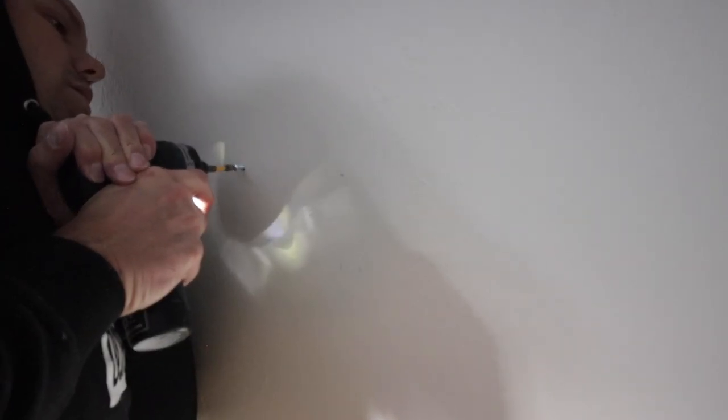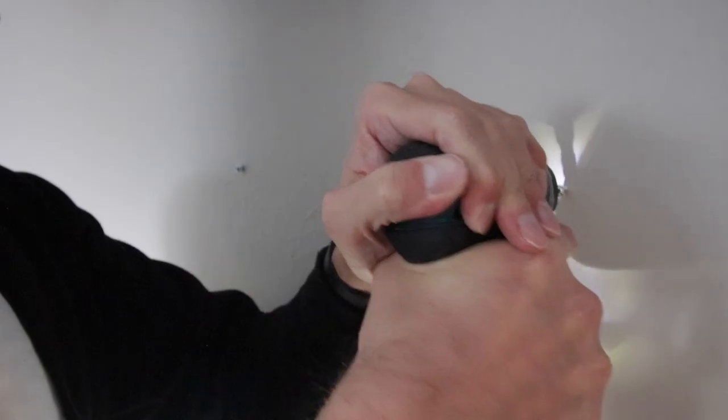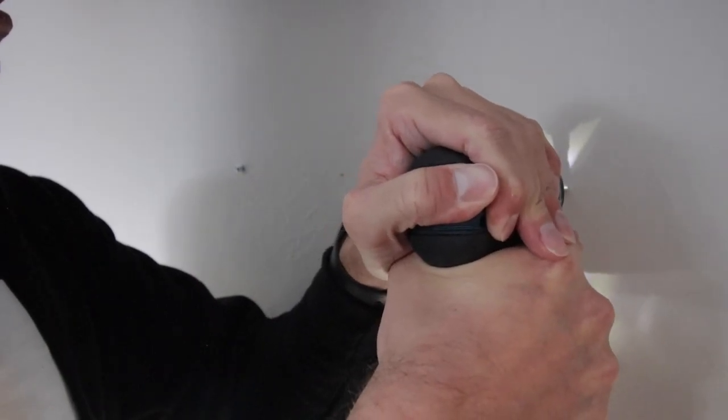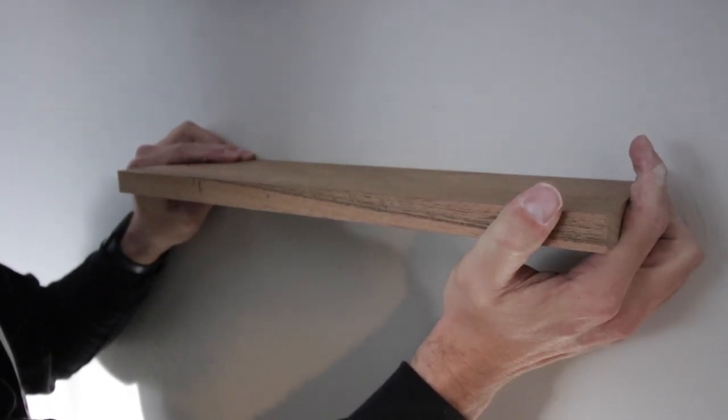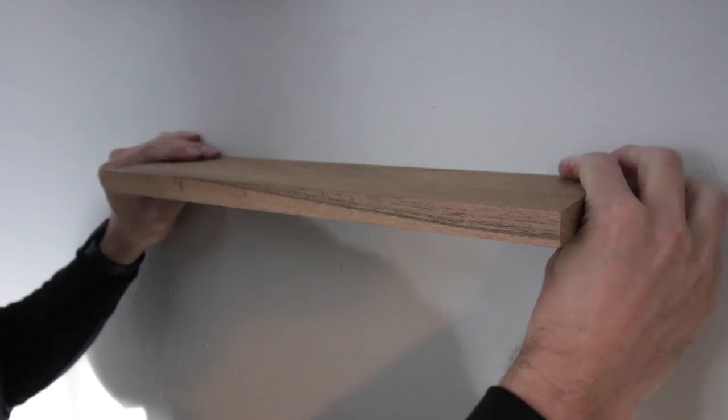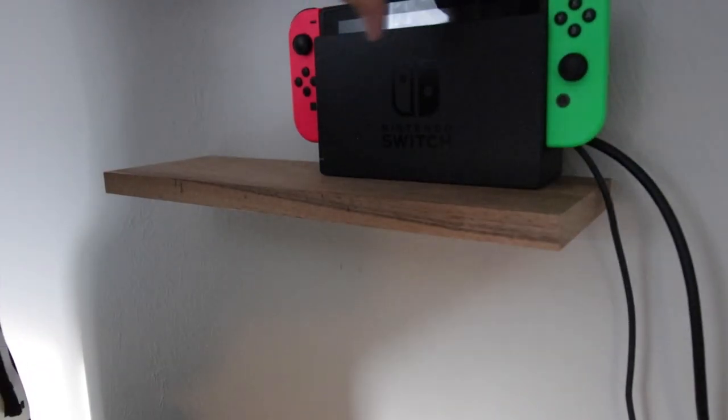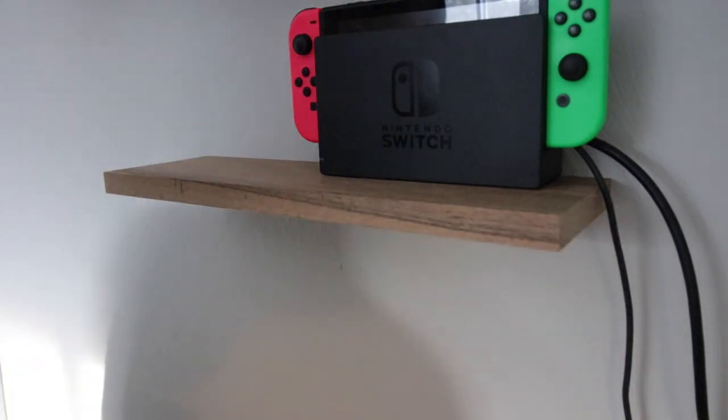Now I'm going to screw in two screws into the wall that will serve as the anchor points. For each screw, I tighten it a little bit, then slide the board over it, and repeat that process until the board is nice and snug. Time for a quick test fit—yeah, it needs to be tightened up just a little bit more, but this is great.